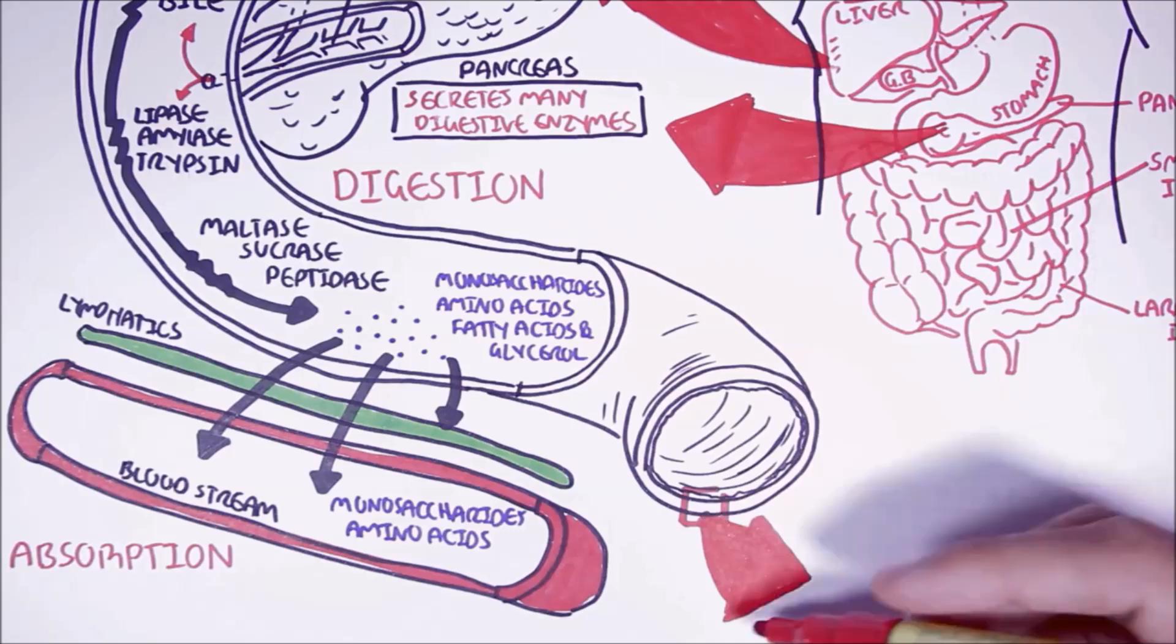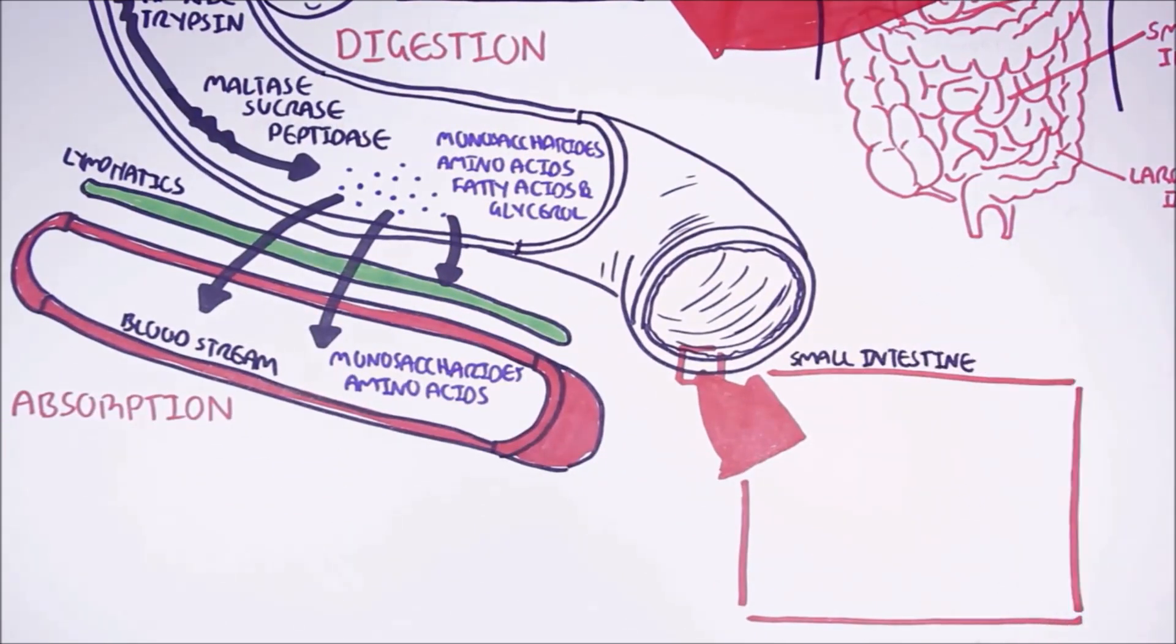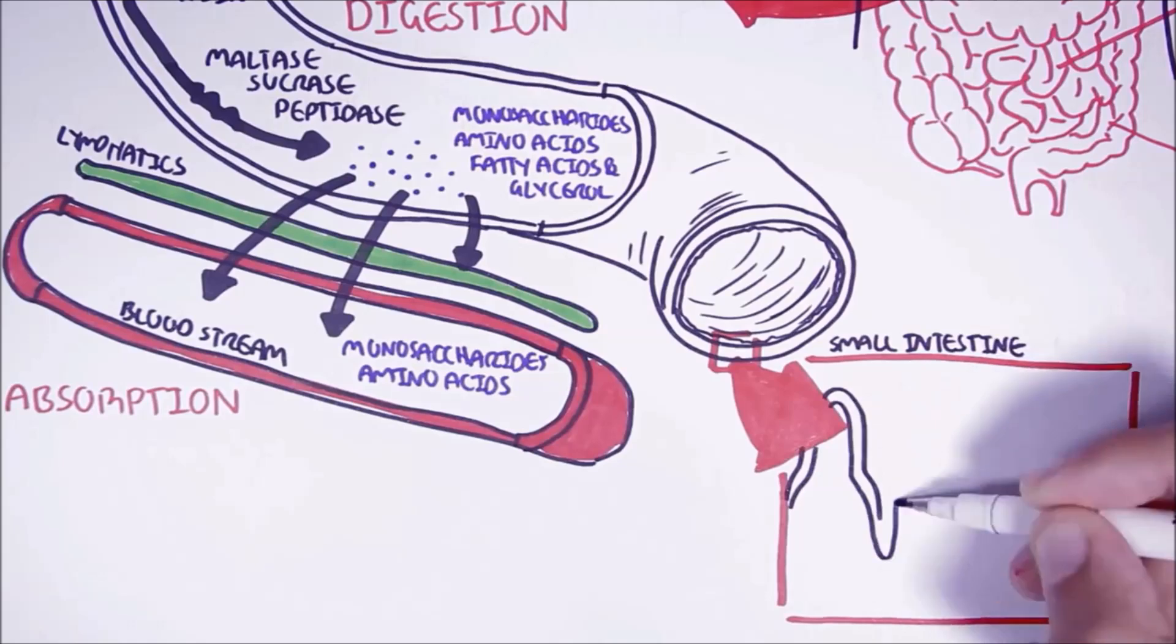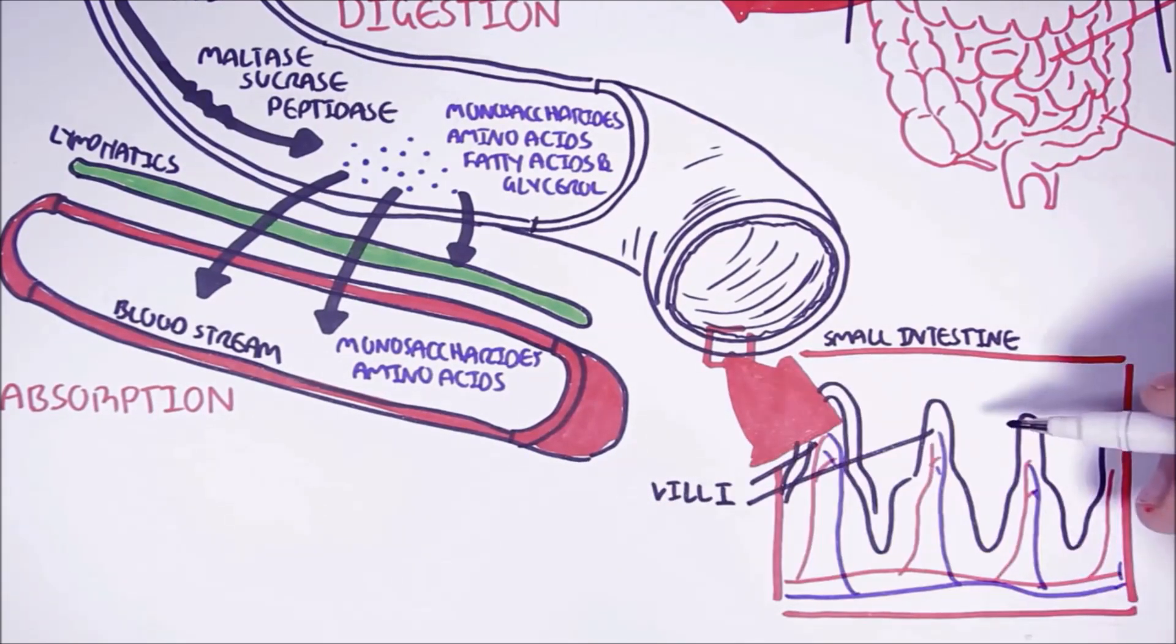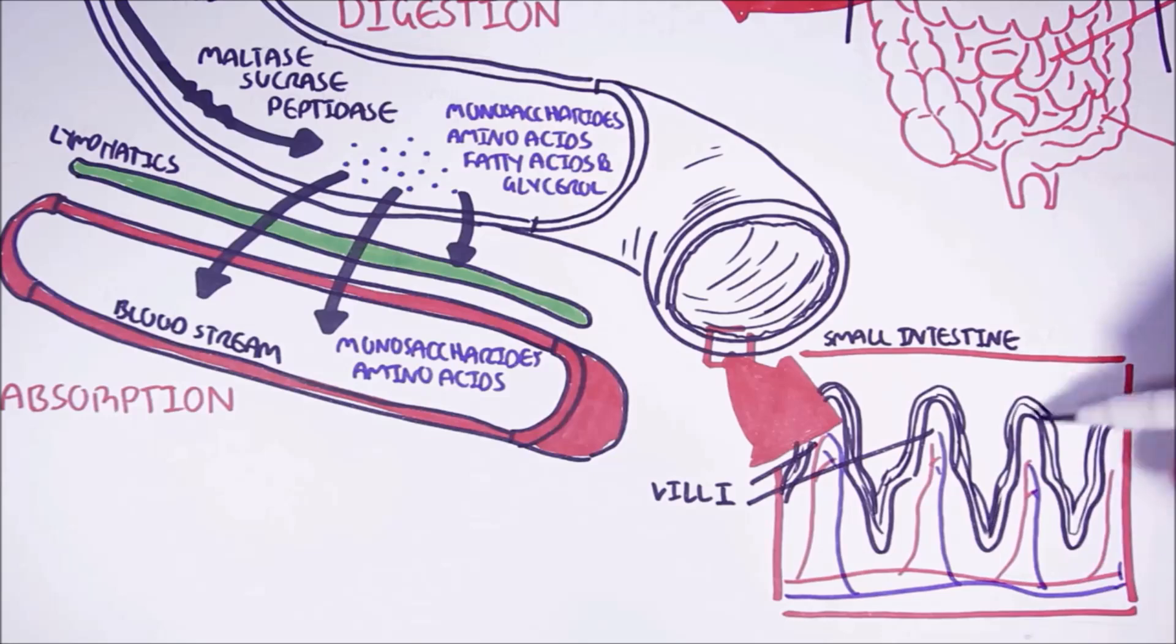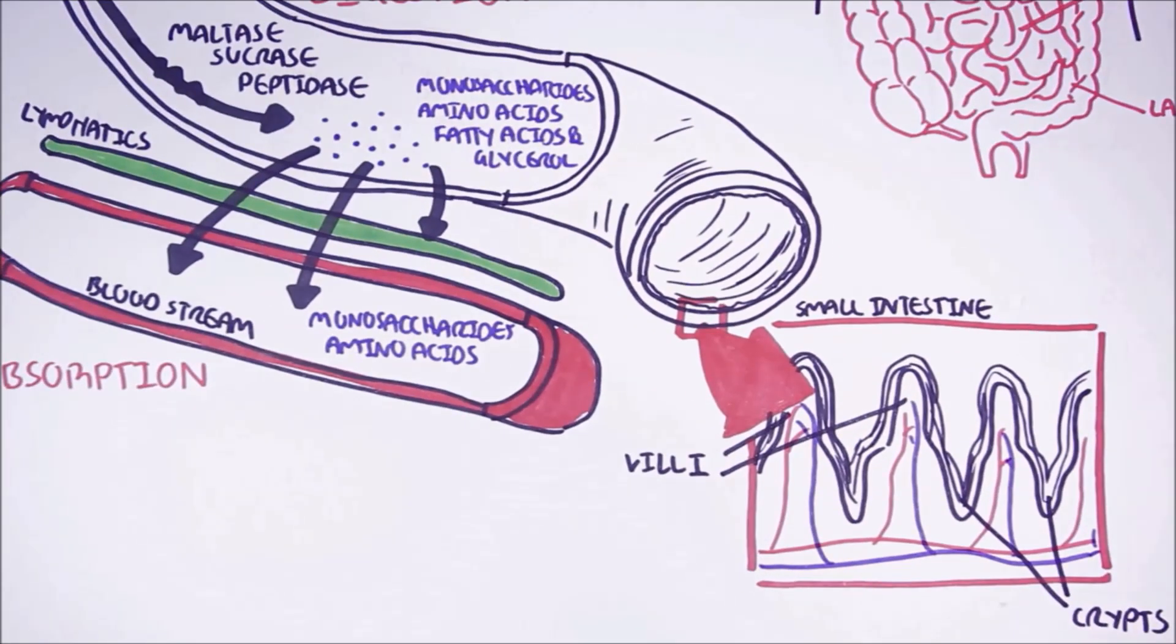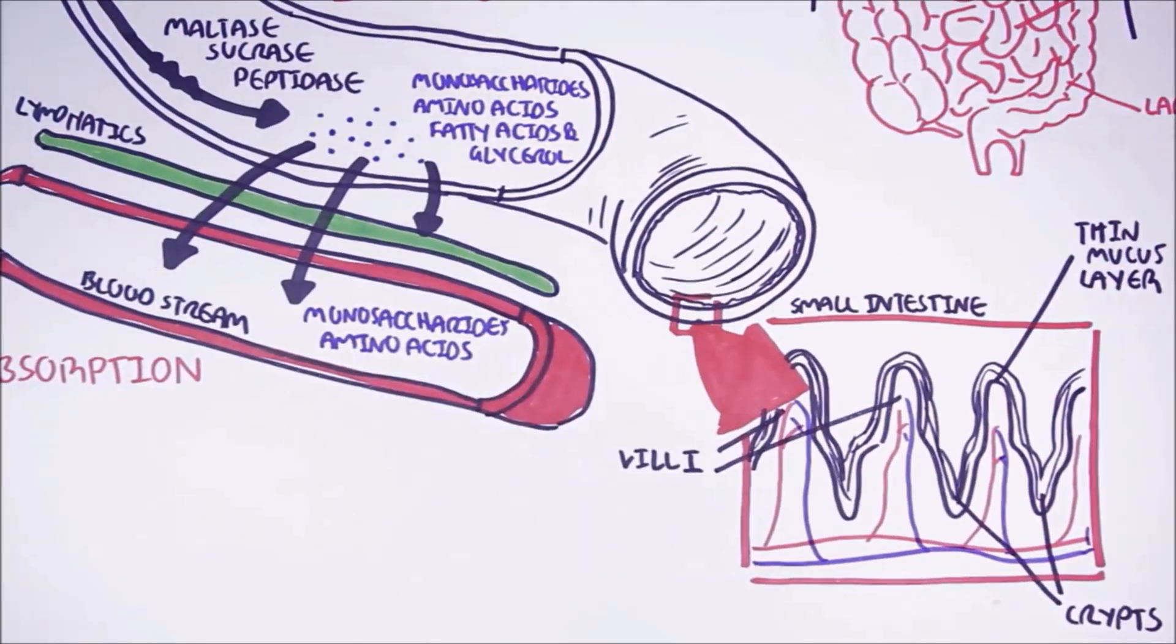If we zoom into the small intestine we can find the lining of the intestine with its rich blood supply. The small intestine is composed of finger-like projections called villi and crypts. Below the crypts are stem cells that keep dividing, renewing the cells above. The villi is important in food digestion and absorption because it increases surface area. The small intestine also has a thin layer of mucus.